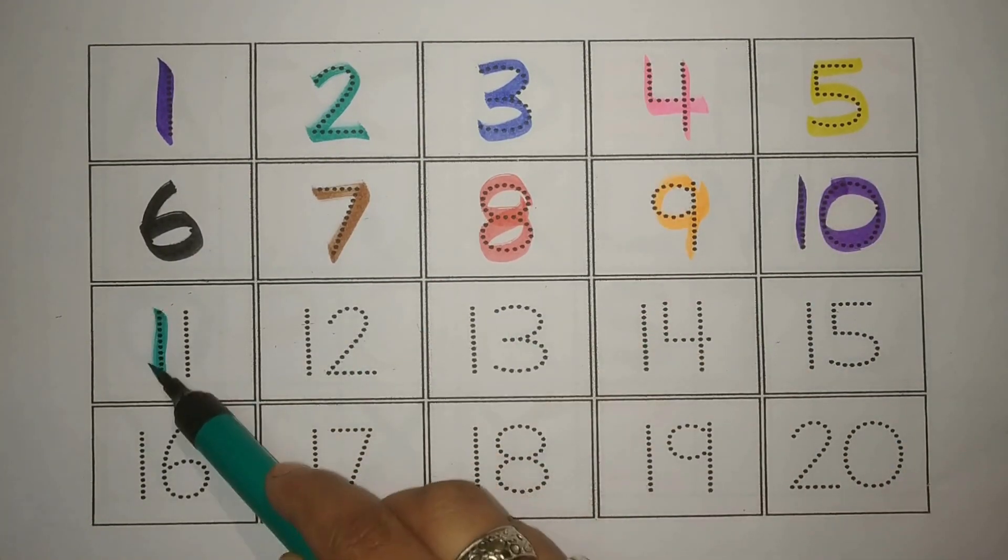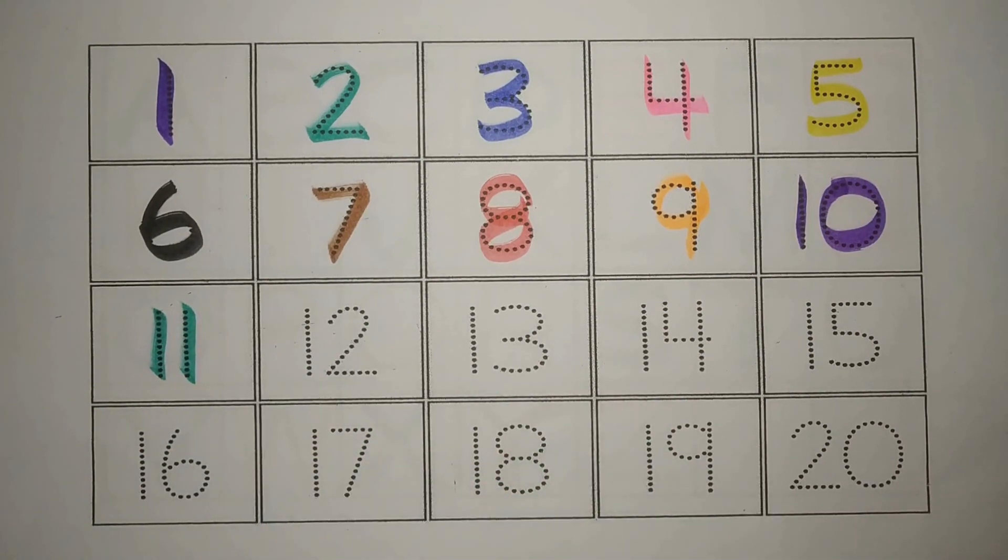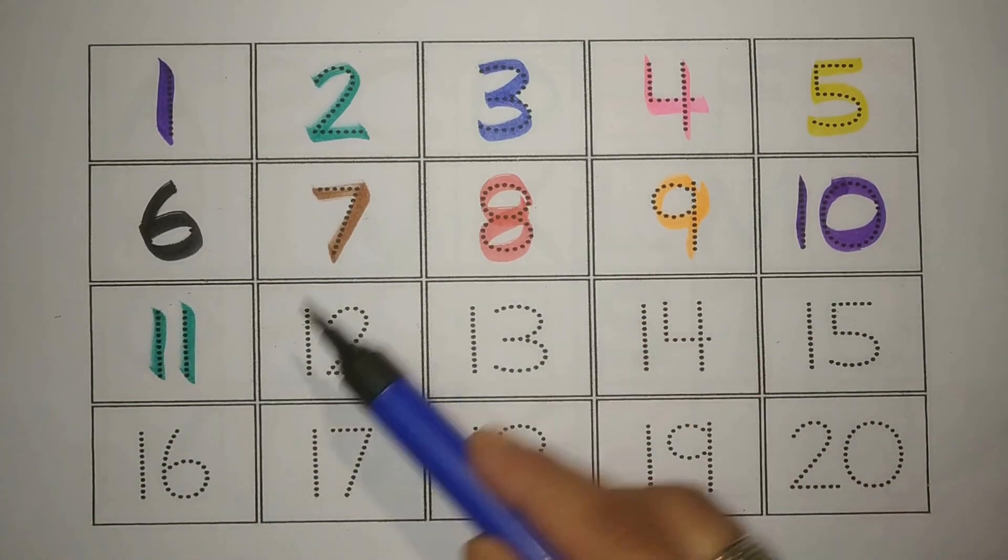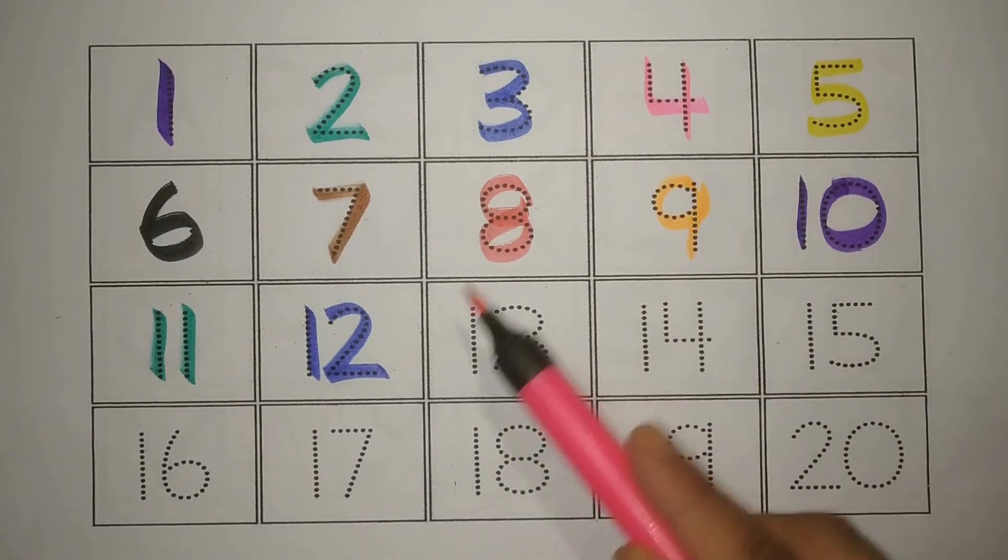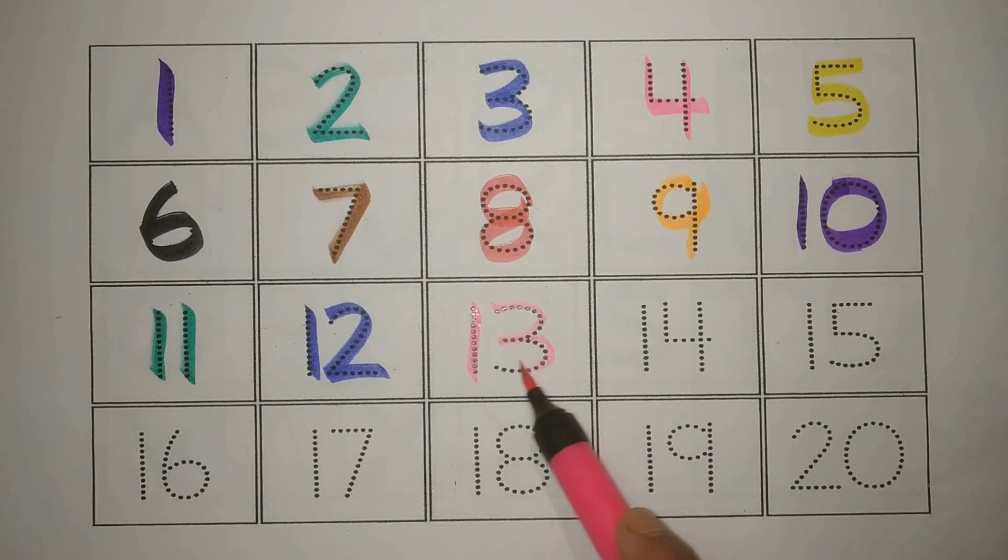Green one one eleven, kiara. Blue one two twelve, baara. Pink one three thirteen, tera.